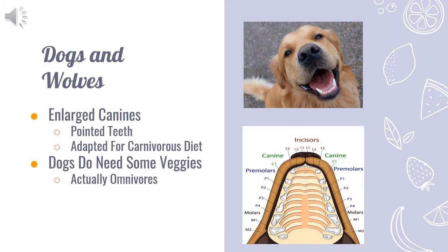Next, we will look at the teeth of wolves and dogs. Like humans, wolves and dogs have all four types of teeth. The only difference is their large canines that have adapted based on their diet. While wolves are carnivores, dogs are actually omnivores. Even though wolves and dogs are closely related, their diets differ based on their environment. Wolves live out in the wild and hunt their food, which is usually other animals. Dogs, on the other hand, have become household pets and their diet can consist of meat, fruits, and vegetables.